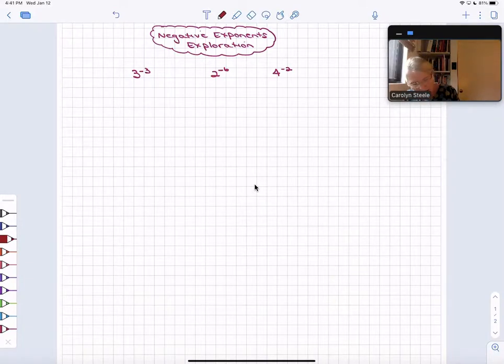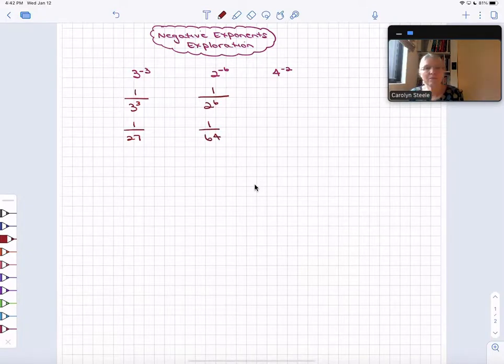All right, for the first one, this is the same as the reciprocal of three to the positive three power, which is 1/27. The next one is equal to the reciprocal one over two to the positive six, or 1/64. And then finally, this is the same as one over four squared, or 1/16.